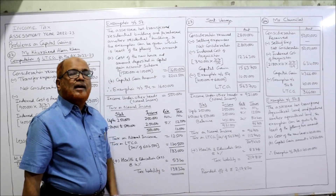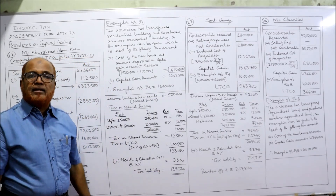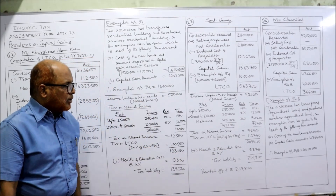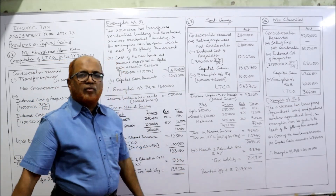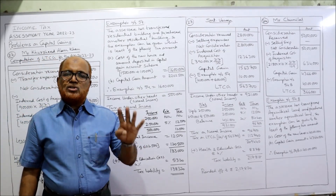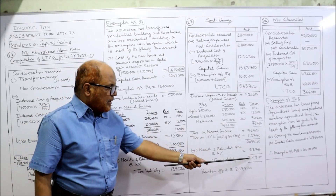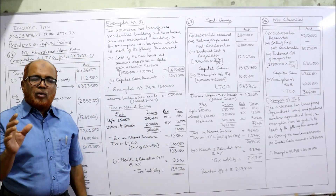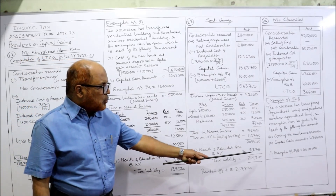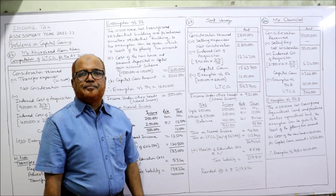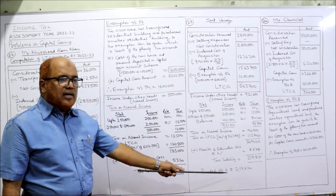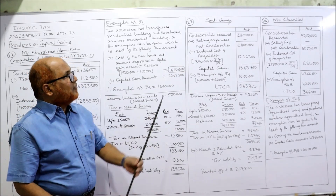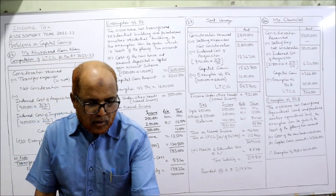Tax on LTCG at flat rate of 20%: Rs. 5,63,700 × 20% = Rs. 1,12,740. Total tax: Rs. 96,700 + Rs. 1,12,740 = Rs. 2,09,440. Add health and education cess at 4%: Rs. 8,378. Total: Rs. 2,17,818. Rounded off to nearest 10: Rs. 2,17,820. That is the end of problem number 23.